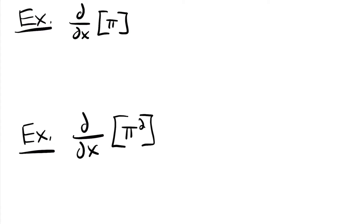Welcome back. Let's start with this one right here. We have the derivative of pi. Pi is just a constant — it's equal to 3.1415 and so on. It's not a variable, and we know that the derivative of a constant is always equal to zero. So in this case, this derivative is just zero.